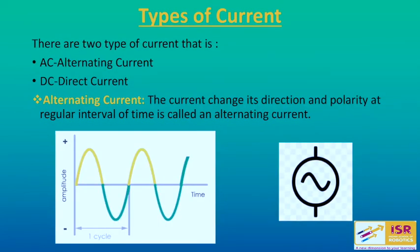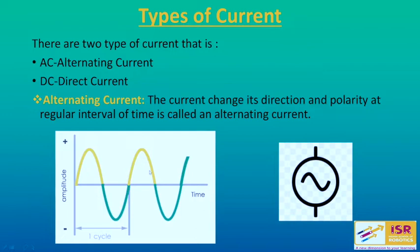We have two types of current: AC and DC. AC stands for alternating current, which changes its direction and polarity at regular intervals of time. As you can see in the first graph, the axes are amplitude and time, and this wave is changing its polarity from plus to minus and also changing its direction. The supply for electrical appliances like refrigerators, microwave ovens, and televisions is alternating current.